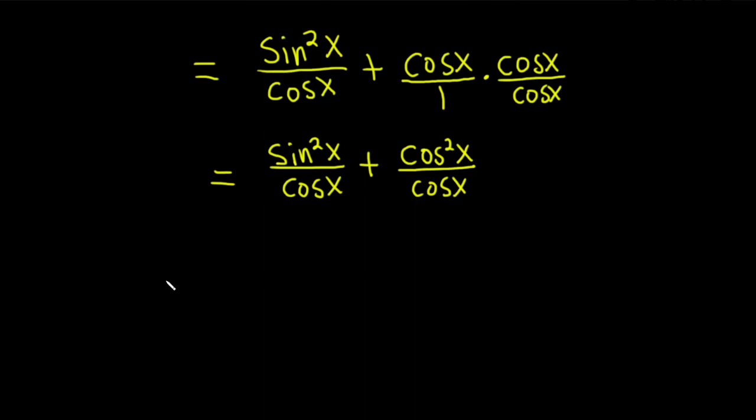So we can actually add these fractions. So this is equal to, so we'll have sine squared plus cosine squared in the numerator. Sine squared x plus cosine squared x. Good stuff. All of this is divided by cosine x.